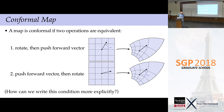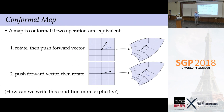A map is conformal if the following two sequences of operations are equivalent: first rotate a vector by some angle, then push it forward by the differential — OR push the vector forward first, then rotate by the same angle. If those two sequences are equal for all points and all vectors, the map is conformal. This is a rigorous definition. One extra condition: no non-zero vector gets mapped to zero — the map is also non-degenerate. If you allow that degeneracy, you get instead a holomorphic function.